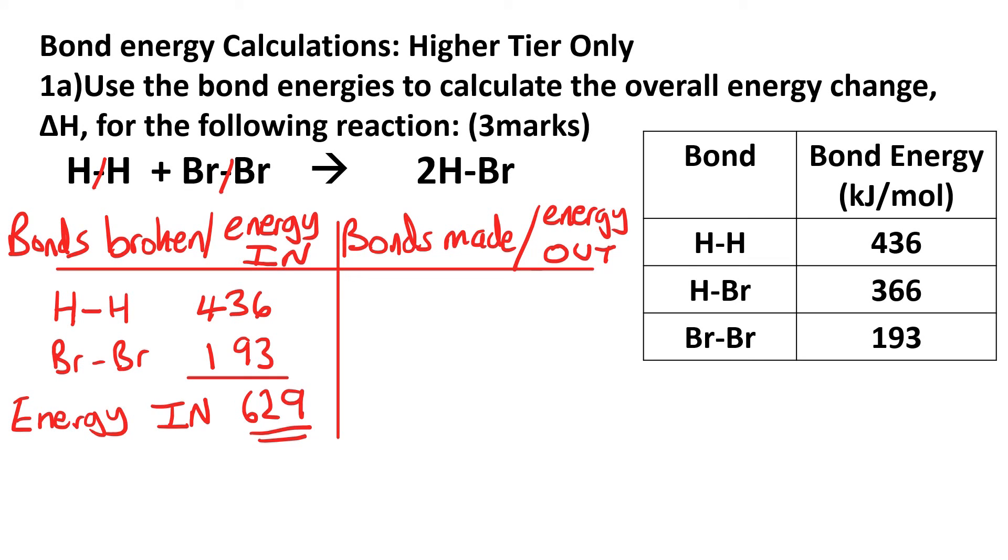When we're looking at the bonds being made, we need to spot that there's a big 2 in front of HBr. So we need to double the number of bonds. In this case, we've got two H-Br bonds. So that's 366 times 2, and that comes to 732 kilojoules per mole for the energy out.